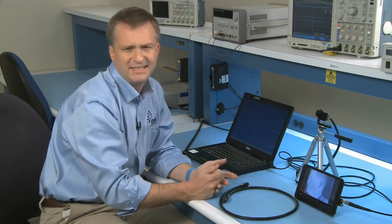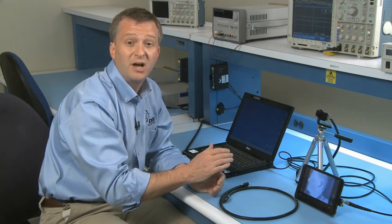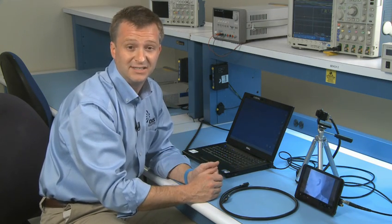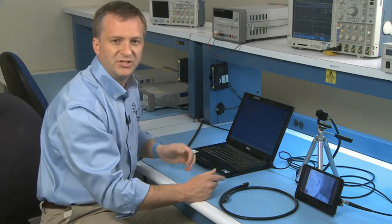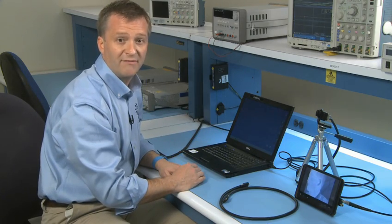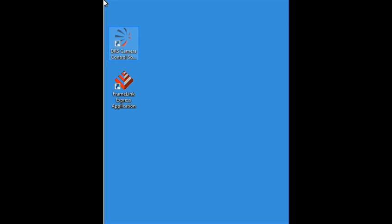For this demonstration, I'm using DRS camera control software, which is available at no cost upon request. If you don't already have it, go to www.drsinfrared.com to download. It takes about 5 minutes to install and your software package comes with full installation instructions. In our demonstration, I've already downloaded the software and have the launch icon on my desktop. To launch the software, simply double click on the icon.